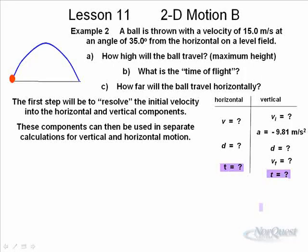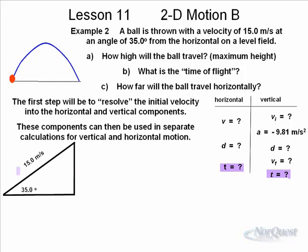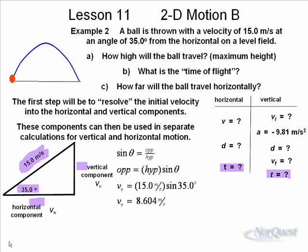What we need to do is use trigonometry and take our initial velocity of 15 meters per second. This ball is being thrown at an angle of 35 degrees with a velocity of 15 meters per second. We need to find the vertical and horizontal components using trigonometry. The sine of 35 is opposite over hypotenuse. The vertical component is equal to the hypotenuse, 15, times the sine of theta. The vertical velocity equals 15 sine 35, or 8.604.